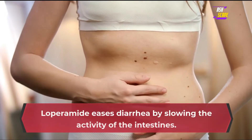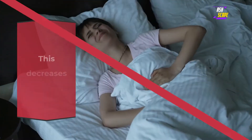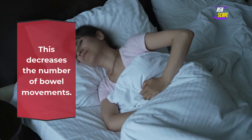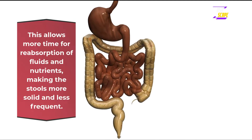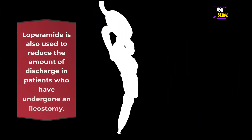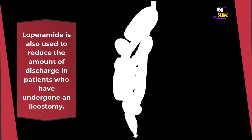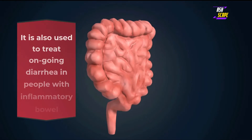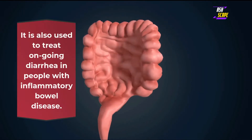Loperamide eases diarrhea by slowing the activity of the intestines. This decreases the number of bowel movements, allowing more time for reabsorption of fluids and nutrients, making the stools more solid and less frequent. Loperamide is also used to reduce the amount of discharge in patients who have undergone an ileostomy, and to treat ongoing diarrhea in people with inflammatory bowel disease.